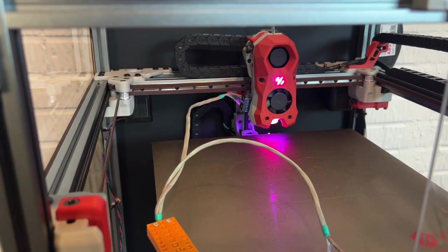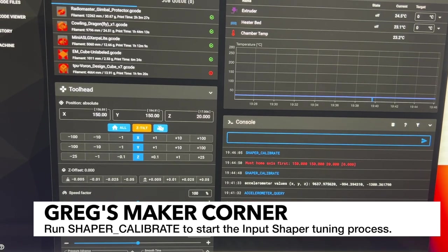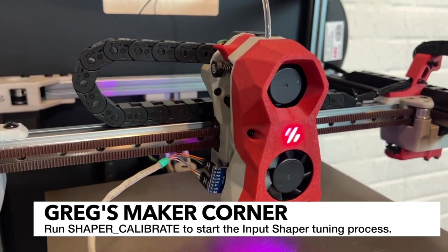Okay so now that we've homed we should be able to run everything. Here we go. Shaper calibrate, we're running it. So it did go ahead and move the head forward a little bit.